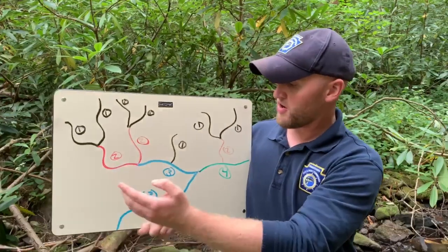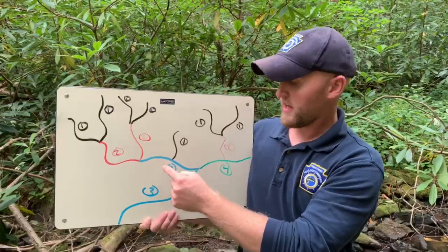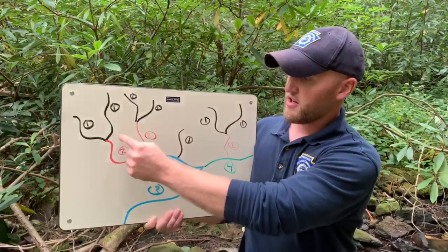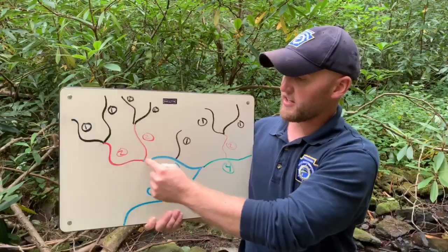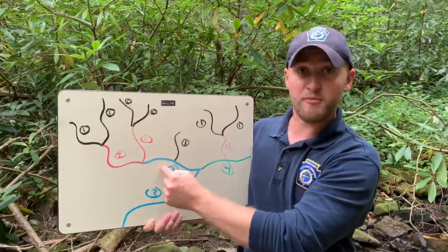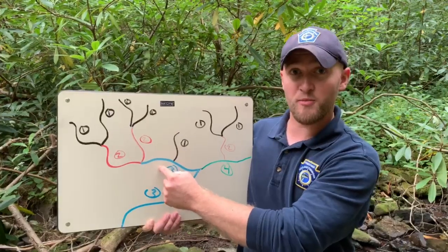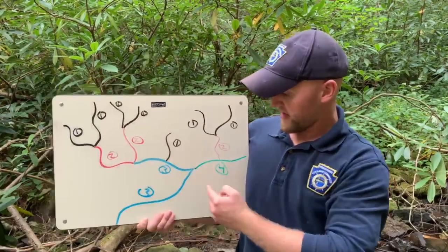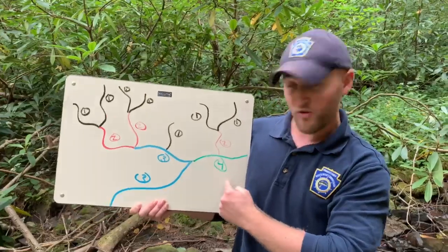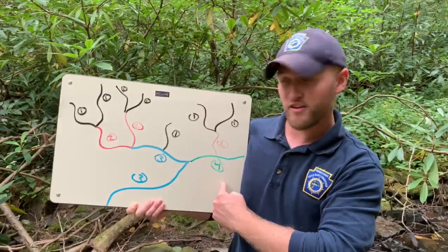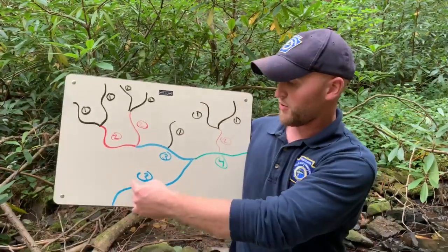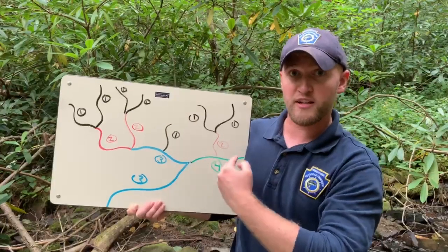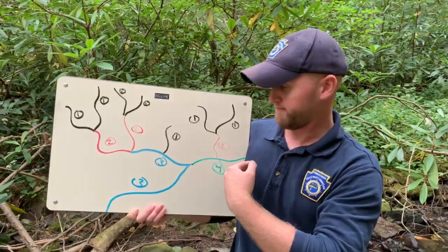The same goes for a third order stream. I have a third order stream represented with blue right here. Two second order streams have to come together to form that third order stream. And we continue on down the line to form a fourth order stream, which I have represented in green. Two third order streams have to come together to form that stream.